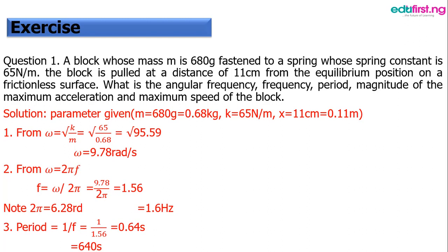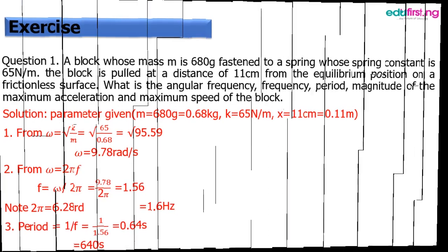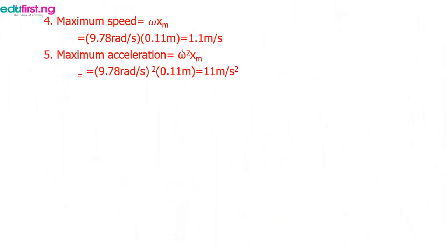Period is the reciprocal of frequency. We are also asked to calculate the maximum speed. Our maximum speed equals omega times x_m, and our maximum acceleration equals omega squared times x_m. We use x_m because that is the maximum displacement the block can reach.